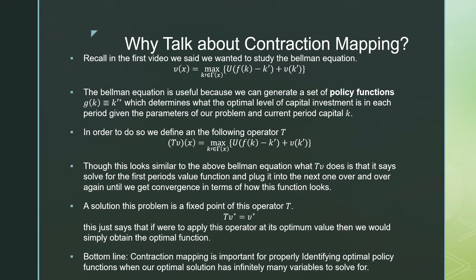So let's talk about why we should talk about contraction mapping. Recall in our first video we wanted to study the Bellman equation. The Bellman equation is useful because we can generate a set of policy functions, noted by g of k, which essentially equals the optimal value of k prime, which is our next period capital stock, which determines the optimal level of capital investment in each period given the parameters of our problem and current period capital k.